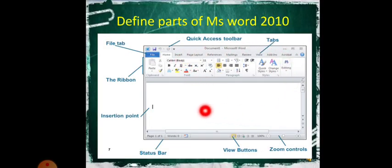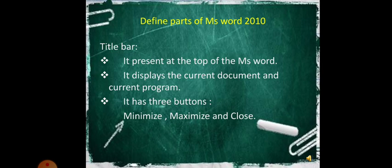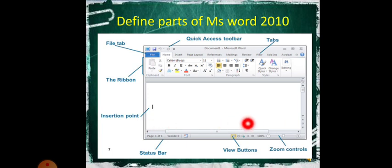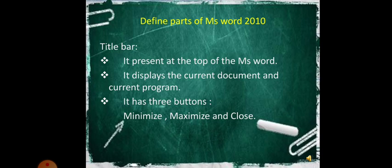After opening the software, this type of screen will be shown on your computer monitor. The parts visible are: the File tab, the Quick Access Toolbar, the tabs, the ribbon, the insertion point which is called the cursor, the status bar, view buttons, and zoom controls. These are the parts of MS Word 2010.